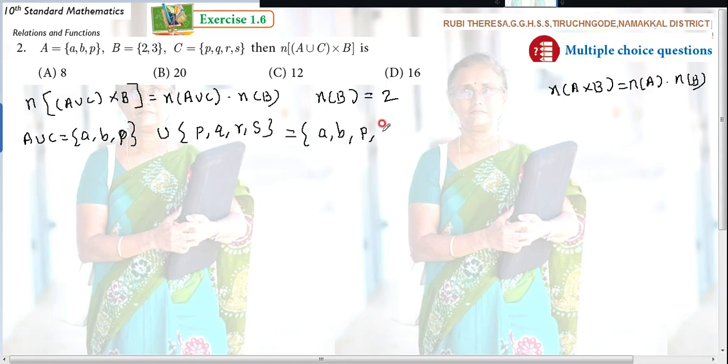Do you follow? So you should not write P. Next what you have to write? Q, R, S. Changing the order of the elements, it is not problem. It won't affect the set. Instead of writing like this, you can write P, Q, R, S, A, B. You can write like this or this. Changing the places, it won't affect. But elements, you should not repeat it again. Only once you must write. So this is the answer.